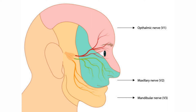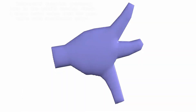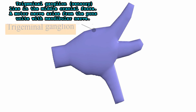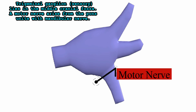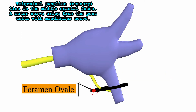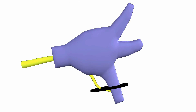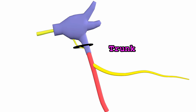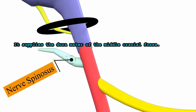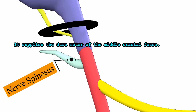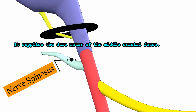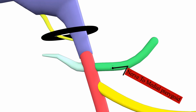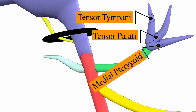The mandible and muscles of mastication are supplied by the mandibular nerve, which is the third branch of the trigeminal fifth cranial nerve. The trigeminal nerve is both sensory and motor, consisting of the trigeminal ganglion which is sensory and lies in the middle cranial fossa. A motor nerve arises from the pons and unites with the mandibular nerve as it exits the middle cranial fossa through the foramen ovale. After exiting, the mandibular nerve trunk divides into anterior and posterior divisions and gives two nerves: the nervus spinosus, which re-enters the cranial cavity via the foramen spinosum with the middle meningeal artery to supply the dura mater; and the nerve to the medial pterygoid, which supplies the medial pterygoid, tensor veli palatini, and tensor tympani muscles.